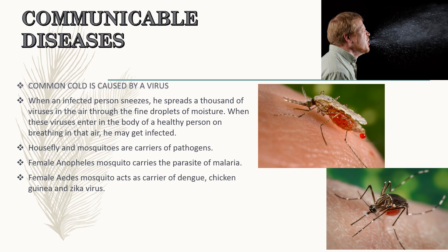If one consumes this contaminated food, he or she is likely to get sick. The female Anopheles mosquito carries the parasite of malaria, and the female Aedes mosquito carries dengue, chikungunya, and Zika virus etc. All mosquitoes breed in water, so pools of stagnant water around houses should be drained out. We should not let water collect in coolers, tires, or flower pots. By keeping our surroundings clean and dry, we can prevent mosquitoes from breeding, and when there are no mosquitoes, there will be no malaria or dengue.